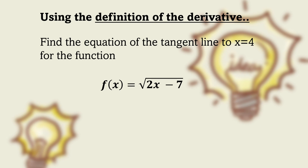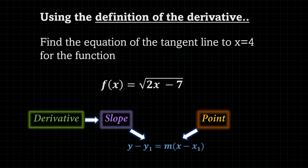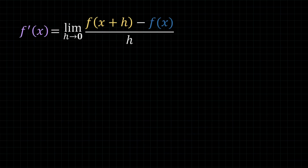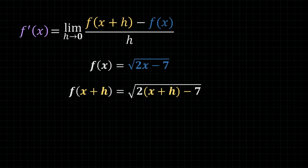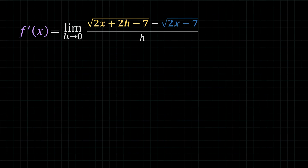The last function we're going to look at is the radical function. Again, exact same thought process: find the slope and then the point. Looking at the definition of the derivative, f of x was given to us in the question. f of x plus h can be found by substituting x plus h into where x is in the original question. We can substitute both of these into the original limit. Ordinary algebra isn't going to save us here because we can't do much when we have a radical subtracting a different radical. There's only one thing we can do here, and it revolves around the term conjugate.